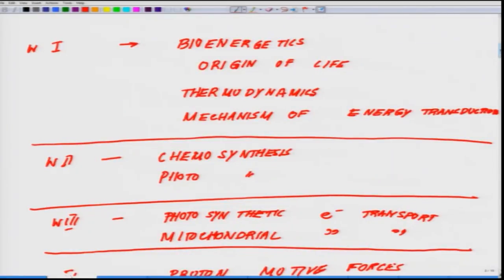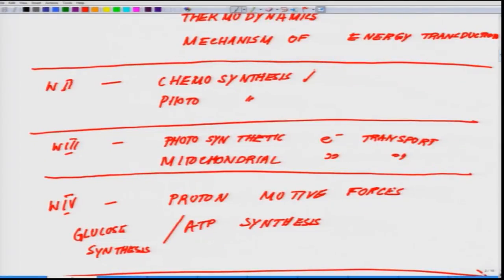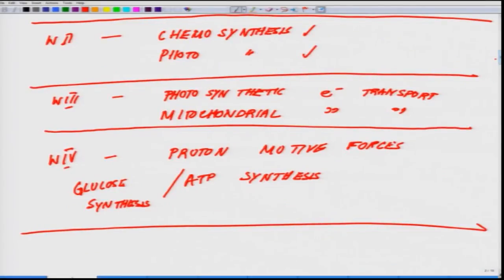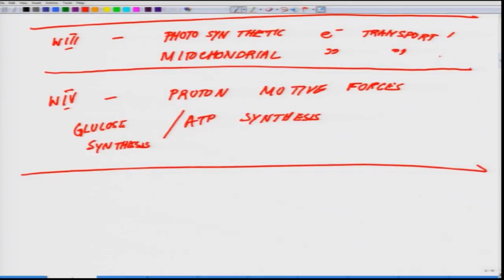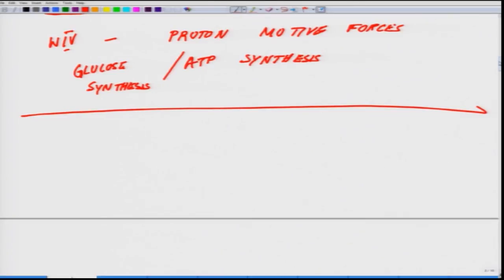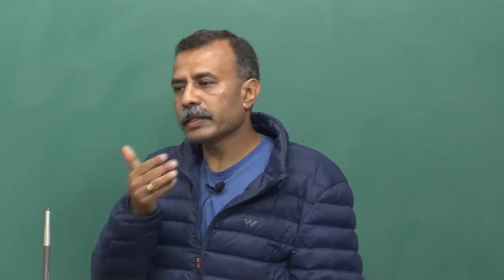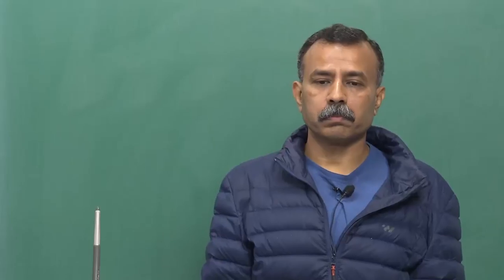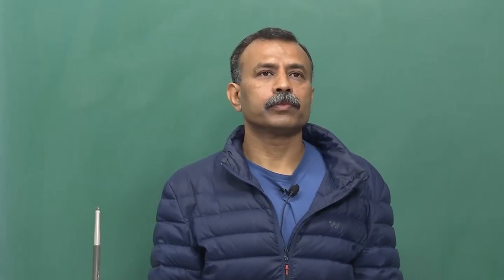The four modules cover: origin of life in terms of bioenergetics; thermodynamics of these processes; mechanism of energy transduction; chemosynthesis; photosynthesis; photosynthetic electron transport; mitochondrial electron transport; proton motive forces; and ATP and glucose synthesis. These next 19 lectures will help us appreciate how apparatus like mitochondria and chloroplast help us use energy to self-assemble molecules to form something which can be used by biological systems.